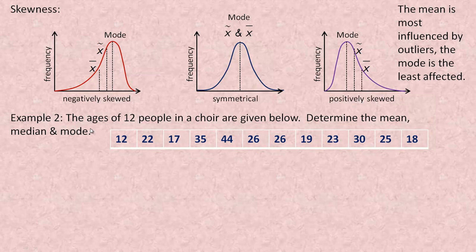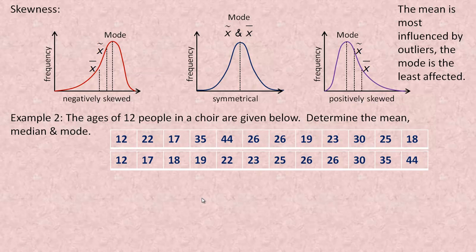Example number two: the ages of 12 people in a choir are given below. You're asked to determine the mean, median, and mode. Notice that these numbers are not in a particular order. For the purpose of calculating the median, they do need to be in order. Let's put them in order, starting at the lowest 12 and the highest 44.